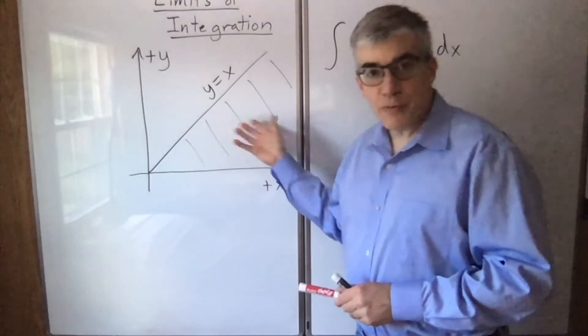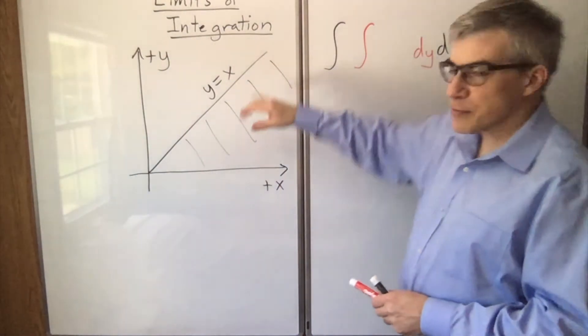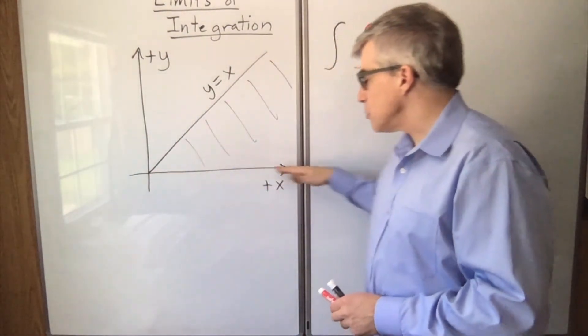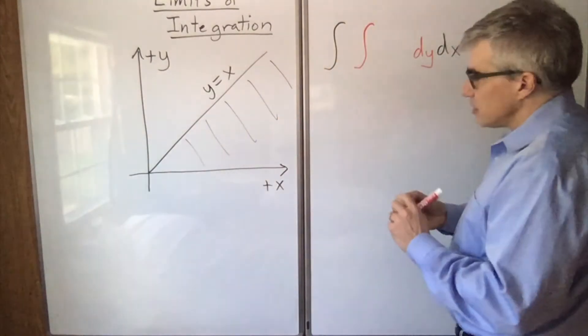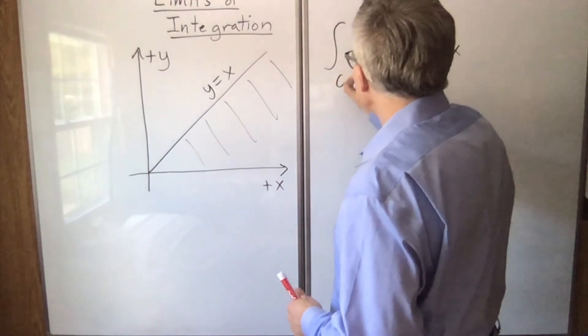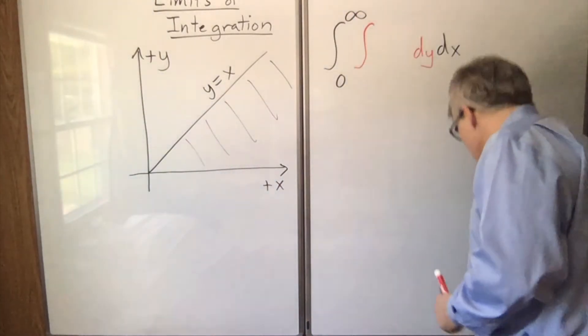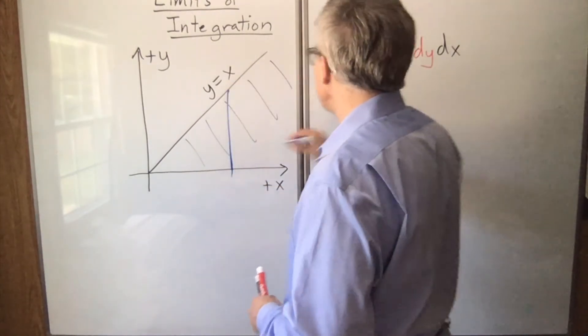Now for an infinite region. We're talking about the lower diagonal half of the first quadrant. It's bounded by y equals x, y equals 0, and goes on forever to the right. So our x limits will run from 0 to infinity. And for a given x value, our y value will run from 0 to x.